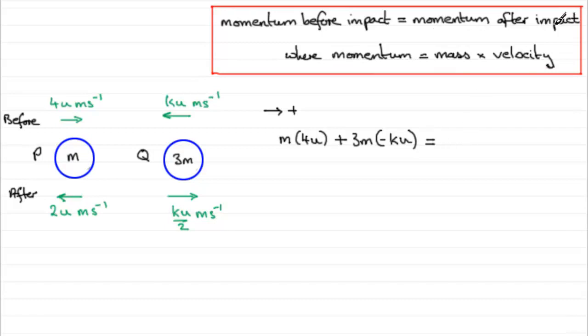Now we look at the total momentum after impact. So we start with P again. It's got a mass of m. And we multiply it by its velocity. And its velocity will be minus 2u because plus is to the right. And it's moving now to the left. So that's minus 2u.